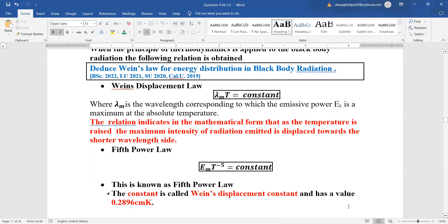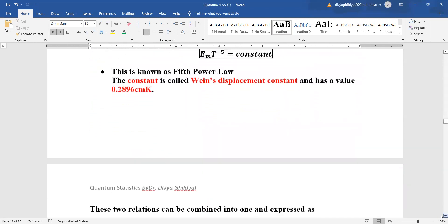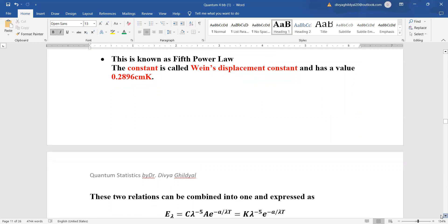The fifth power law, e m t to the power of minus five is a constant. The constant is called Wayne's displacement constant and it has an approximate value of 0.2896 centimeter Kelvin.